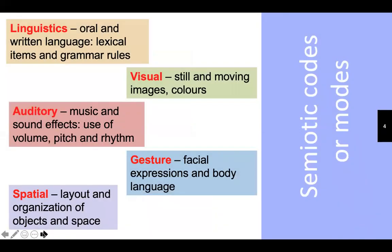There are four types of semiotic code or mode: linguistics, visual, auditory, gesture, and spatial. Linguistics includes oral and written language, lexical items and grammar rules, while visual includes text, still and moving images and also colours.